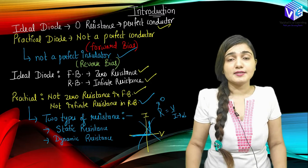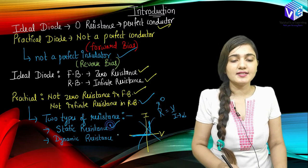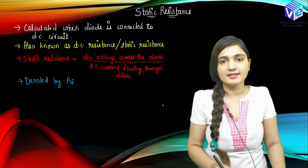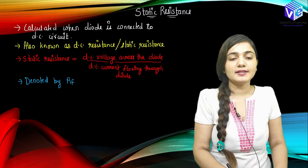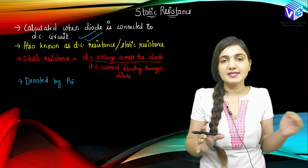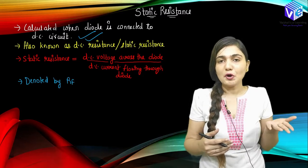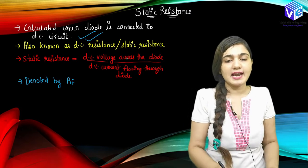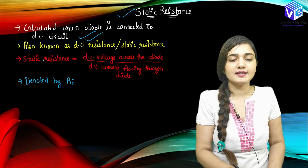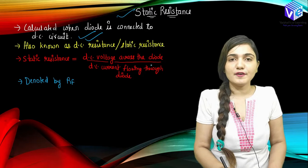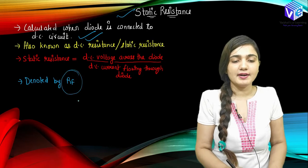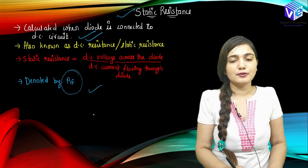So when we don't have zero or infinite resistance, we must have some resistance in the forward or reverse bias. How do we calculate the resistance? We classify the resistance as static resistance and dynamic resistance. Static resistance is calculated when the diode is connected to a DC circuit. It is also known as DC resistance, given by DC voltage across the diode divided by DC current through the diode, and we denote it with RF.